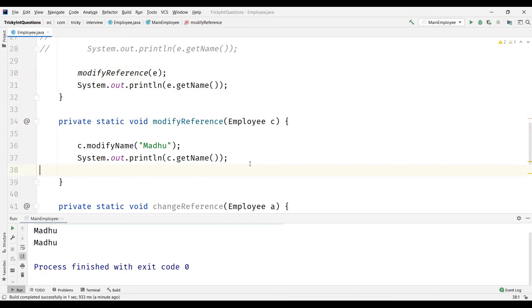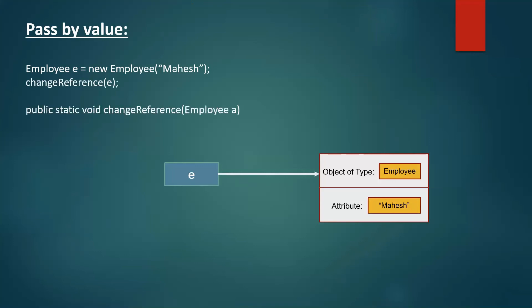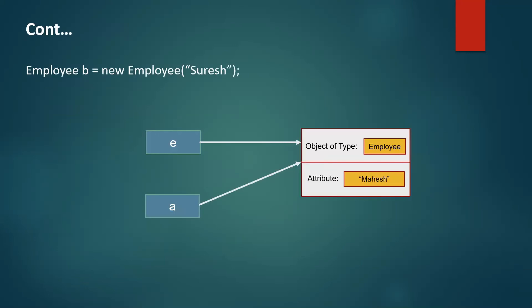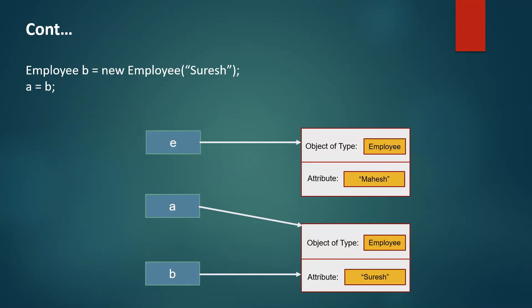A picture is worth 1000 words. Let's see this in pictures. We had an employee object created with the attribute value Mahesh. Then we called the changeReference method, so the value of reference E is copied into A — so A is referencing to the same object as E. Now we created another object B which has attribute value Suresh, and then we copied B to A. So A was previously pointing to the object referenced by E, but now it changes to point to B. And you can see that A can in no way change the object E is pointing to.